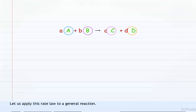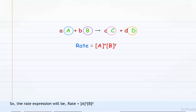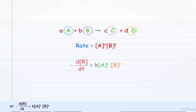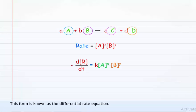Let us apply this rate law to a general reaction: aA plus bB gives cC plus dD, where small letters a, b, c, and d are the stoichiometric coefficients. The rate expression will be: rate equals [A] raised to x multiplied by [B] raised to y, or minus dR/dt equals K into [A]^x into [B]^y. This form is known as the differential rate equation.